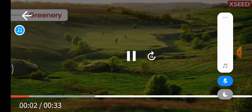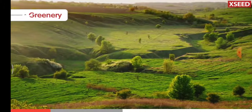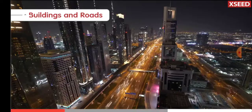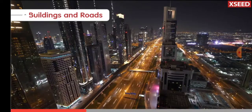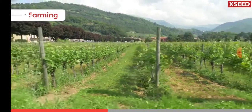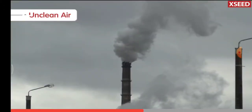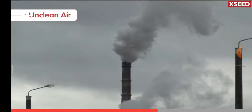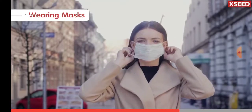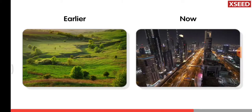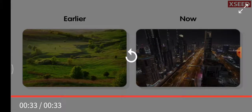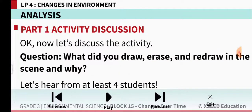In the past there were many trees and much greenery. Now trees have been cut down to make buildings and roads and for growing more crops. In cities the air has become polluted and difficult for us to breathe. This is how our environment has changed over time.